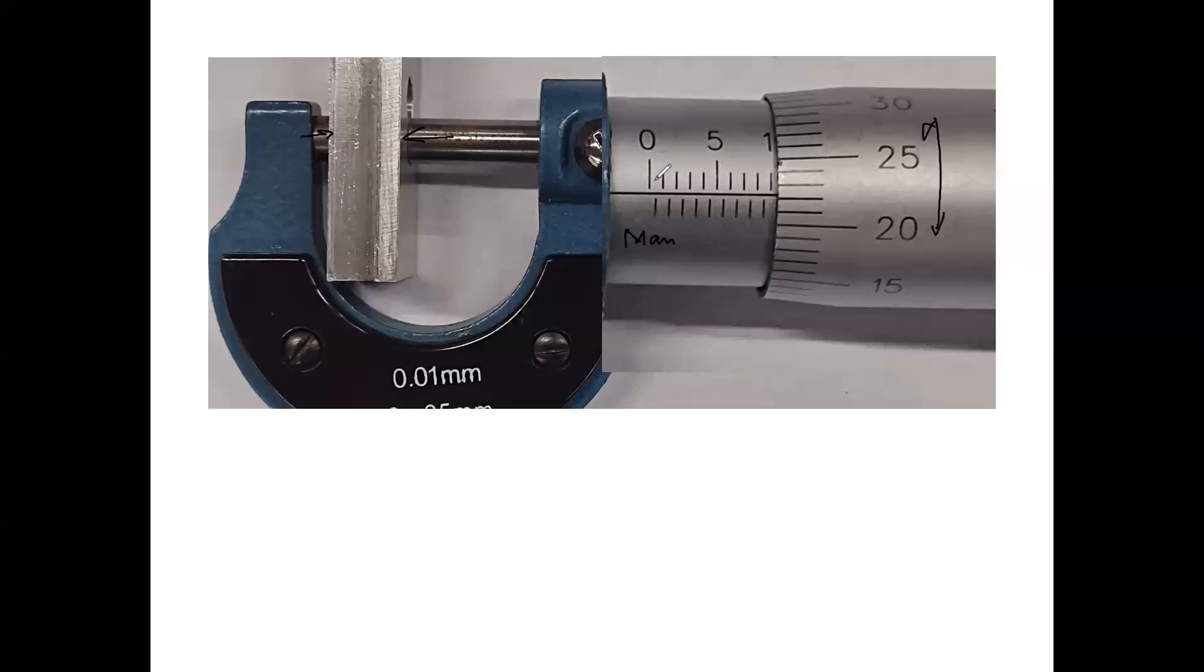So you can see on the main scale, you have two lines, one above this horizontal line and one below the horizontal line. If this is zero, this line corresponds to 0.5 mm. This corresponds to 1 mm. This corresponds to 1.5 mm. So these lines correspond to 0.5 millimeter milestones along the main scale.